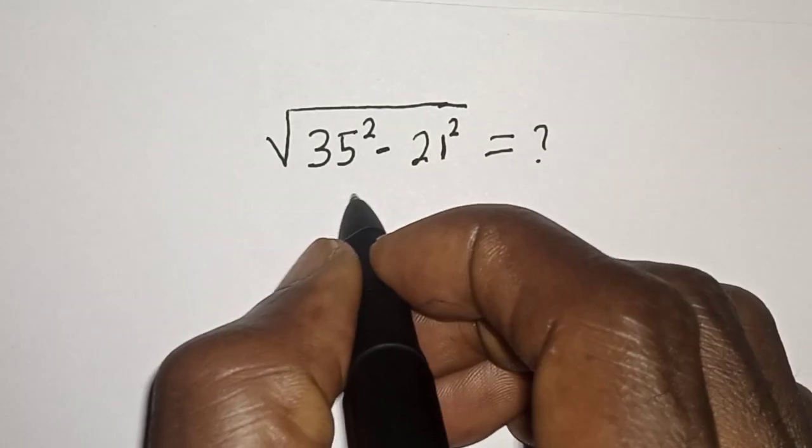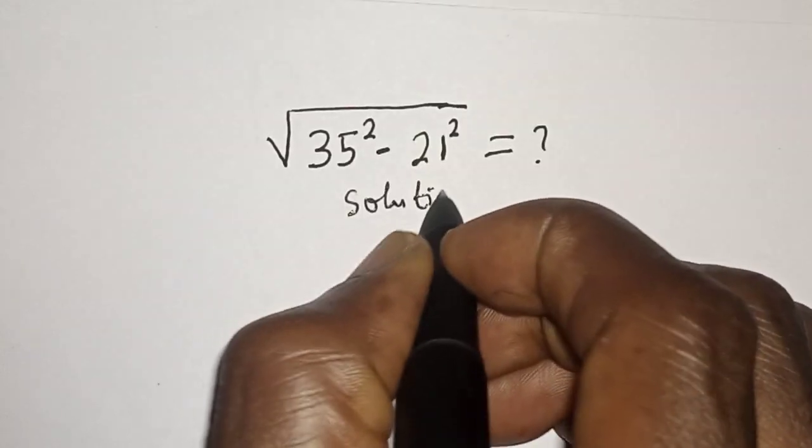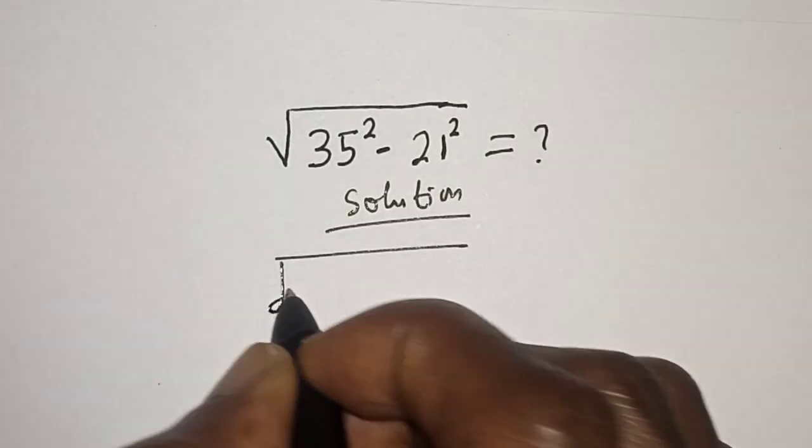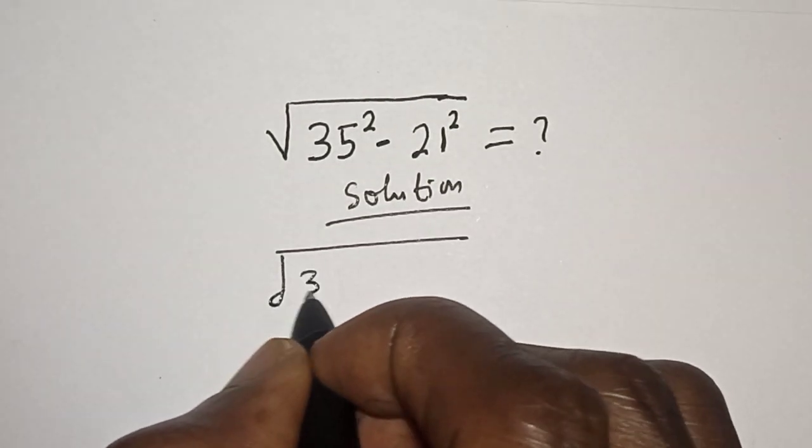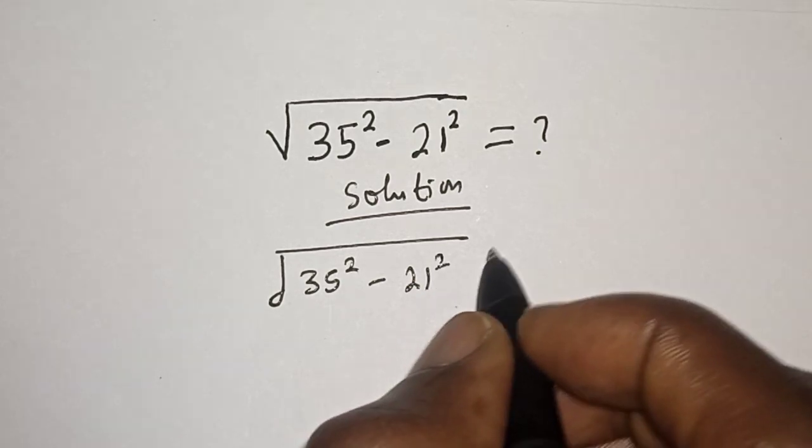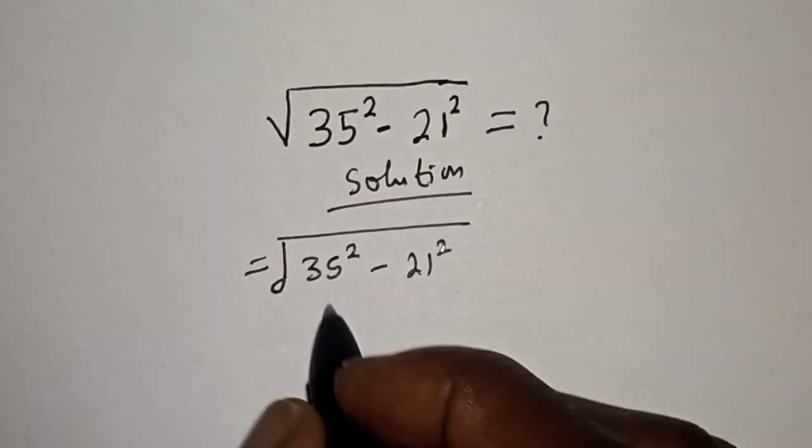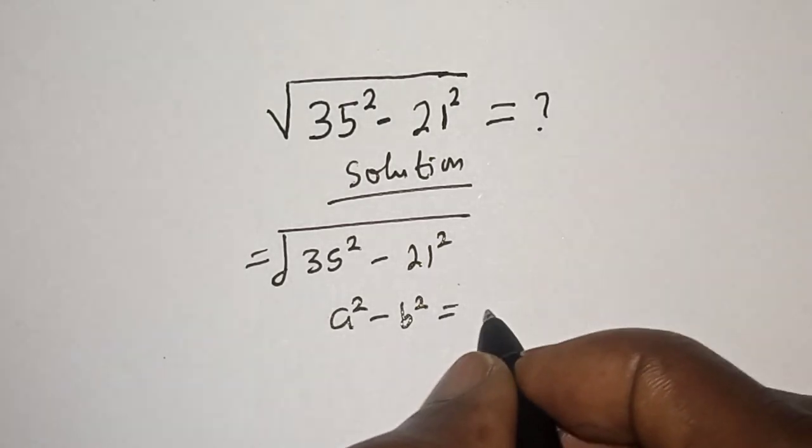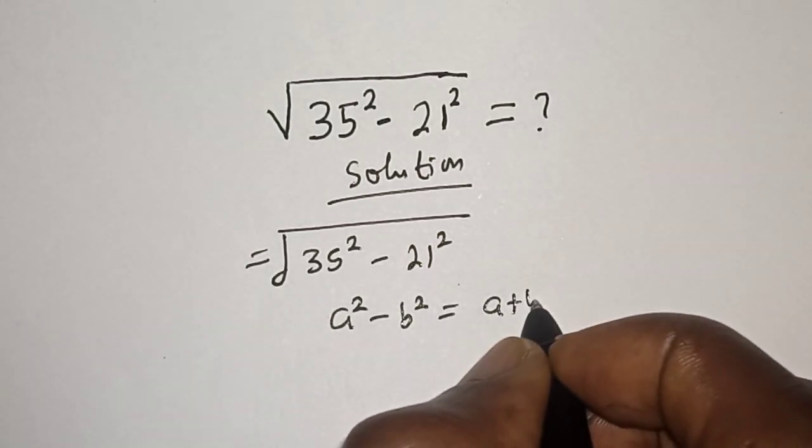Solution: we have square root of 35 squared minus 21 squared. This is a perfect square. Take note of this rule that a squared minus b squared is equal to (a plus b) multiplied by (a minus b).